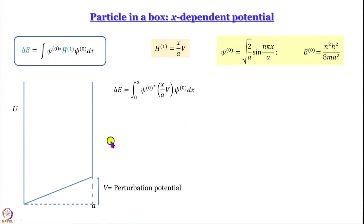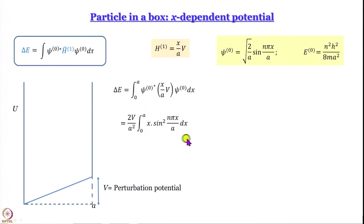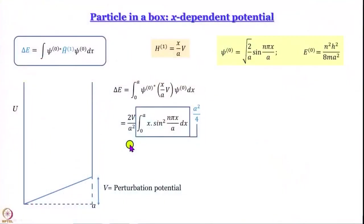Inside the integral we are left with the integral from 0 to a of x · sin²(nπx/a) dx. This is a standard integral — not very difficult — and the value turns out to be a²/4. So delta E = (2V/a²) × (a²/4) = V/2.